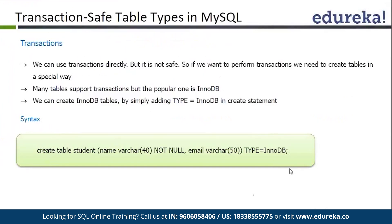It is always better to use a particular table type for transactions. We use InnoDB tables in our case. InnoDB tables are called transaction-safe tables, meaning transactions can execute perfectly on these tables and our commit and rollback will work as per the ACID principle. From MySQL version 5.6, the default table type is InnoDB. Before that, the default table type was MyISAM, and we had to manually alter our table to make it InnoDB if we were going to do any kind of transactions or apply foreign key constraints.